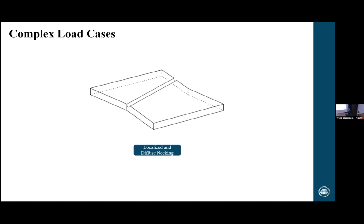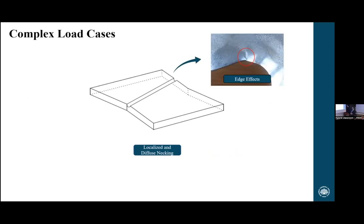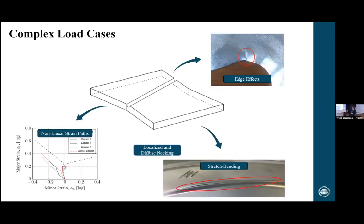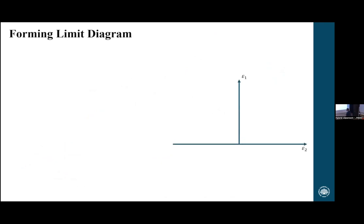The three complex load cases I have been focusing on are edge effects, stretch bending, and non-linear strain paths. But before diving into the research, we need to understand why these three are particularly a problem. To do that, we'll look at how failure is determined today in industry — through the forming limit diagram, a beautifully simple invention: a 2D coordinate system with the principal strains on the x and y-axis.